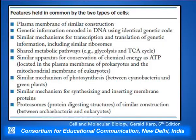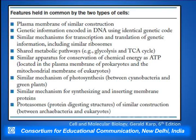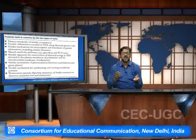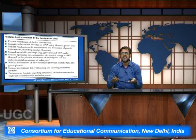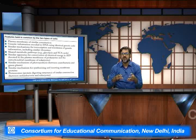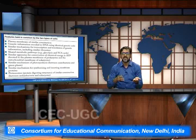Features held in common by the two types of cells: there is a presence of plasma membrane of similar constitution in both. The genetic information coded in prokaryotes and eukaryotes is basically the DNA system. There are transcription and translation processes in both, which include the ribosome in which translation takes place. There are various metabolic pathways such as glycolysis and the Krebs cycle or TCA cycle present in both, and the major energy currency of the cell is the ATP molecule.